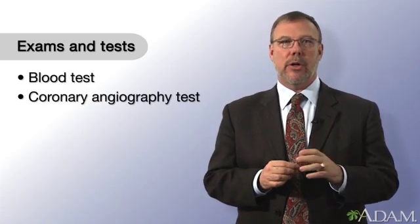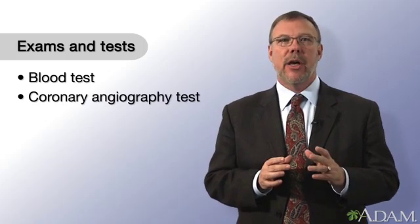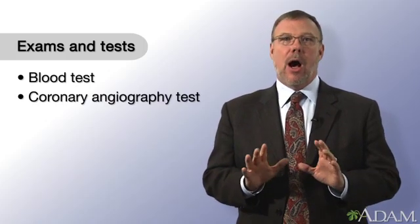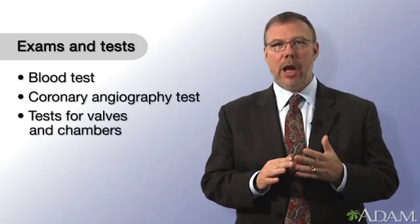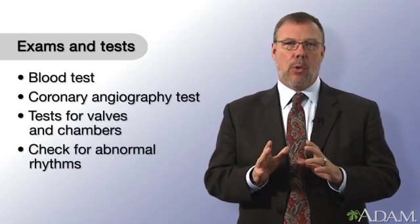If blood moves slowly or not at all through your coronary arteries, you have either a narrowed or blocked artery. Other tests can look at the valves and chambers of your heart and check for abnormal heart rhythms.